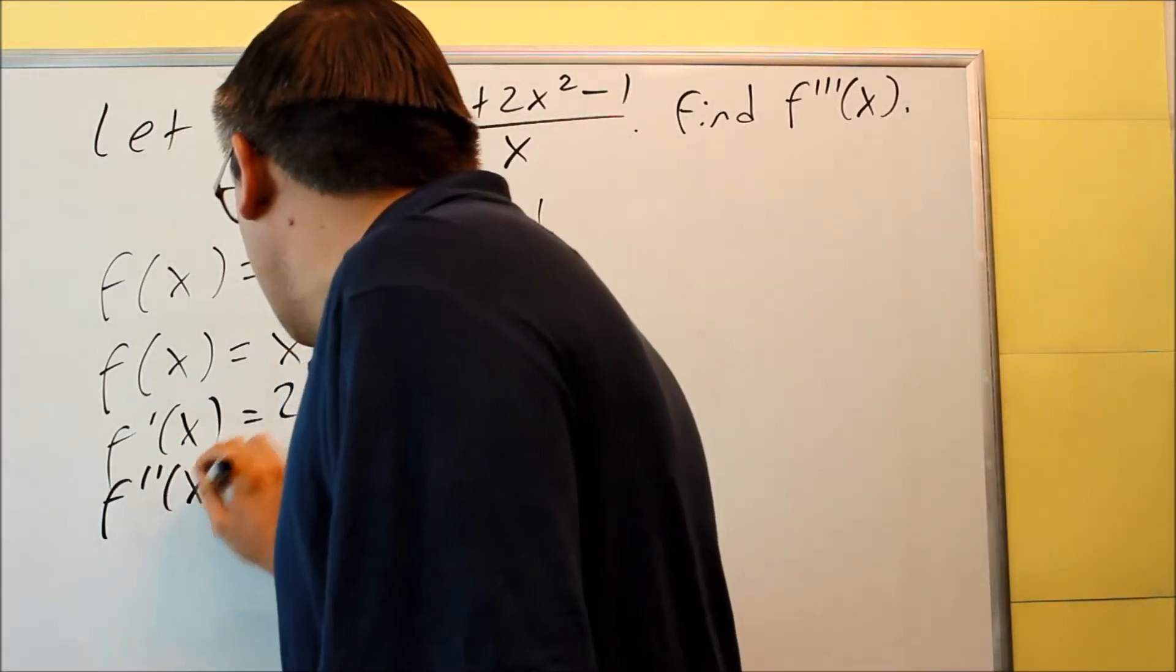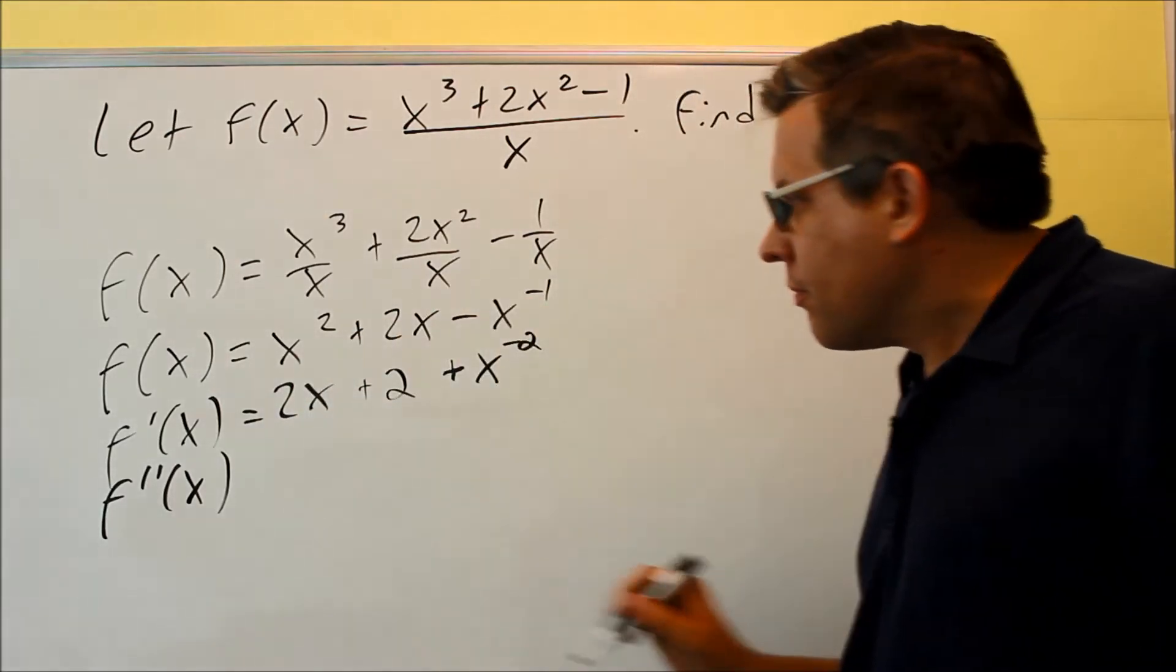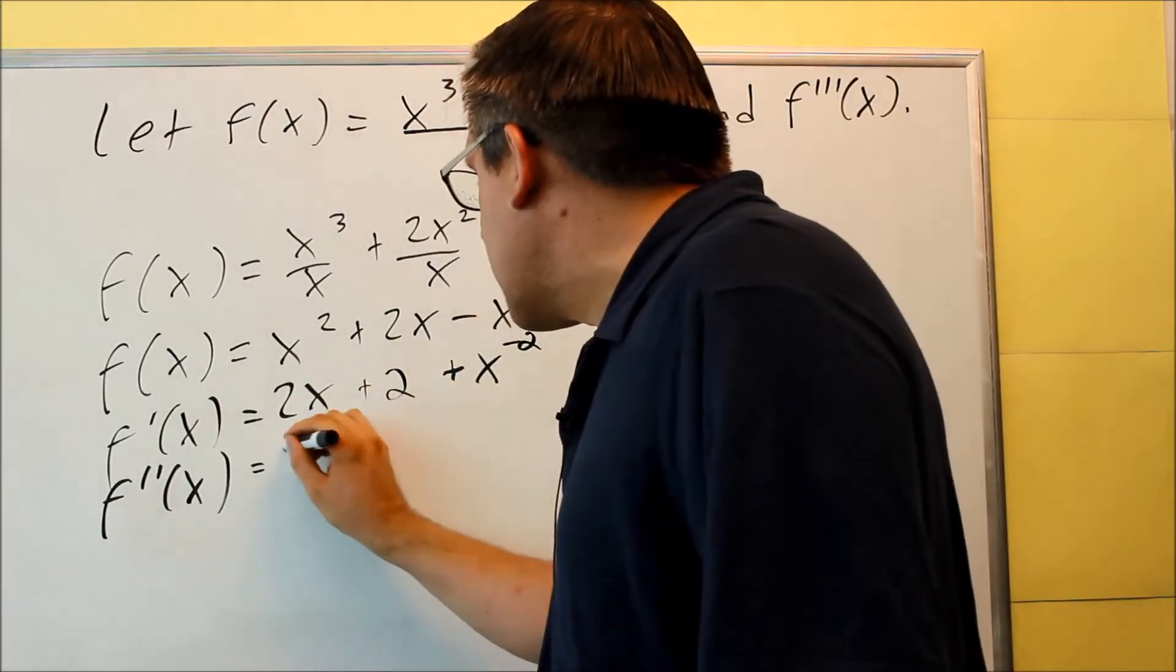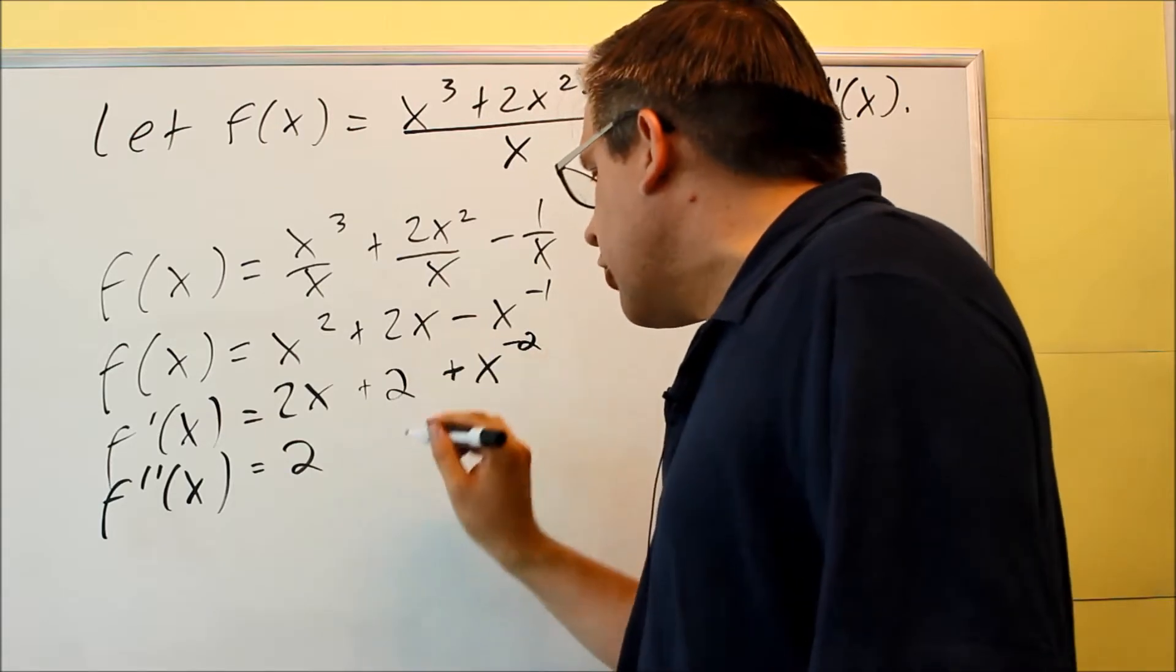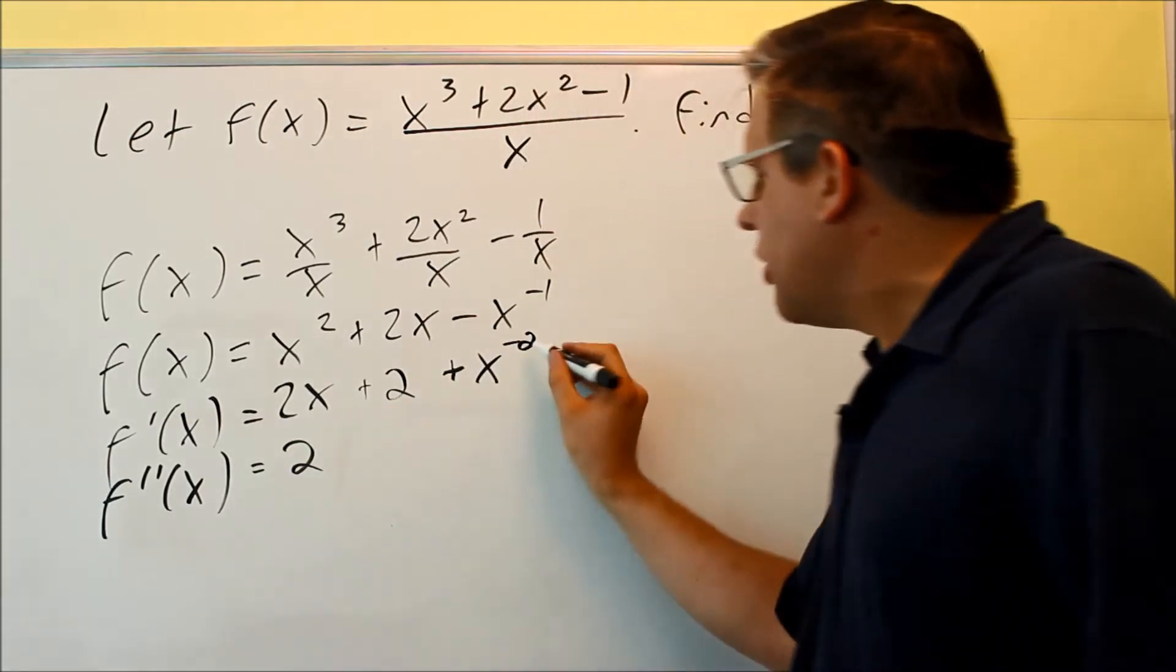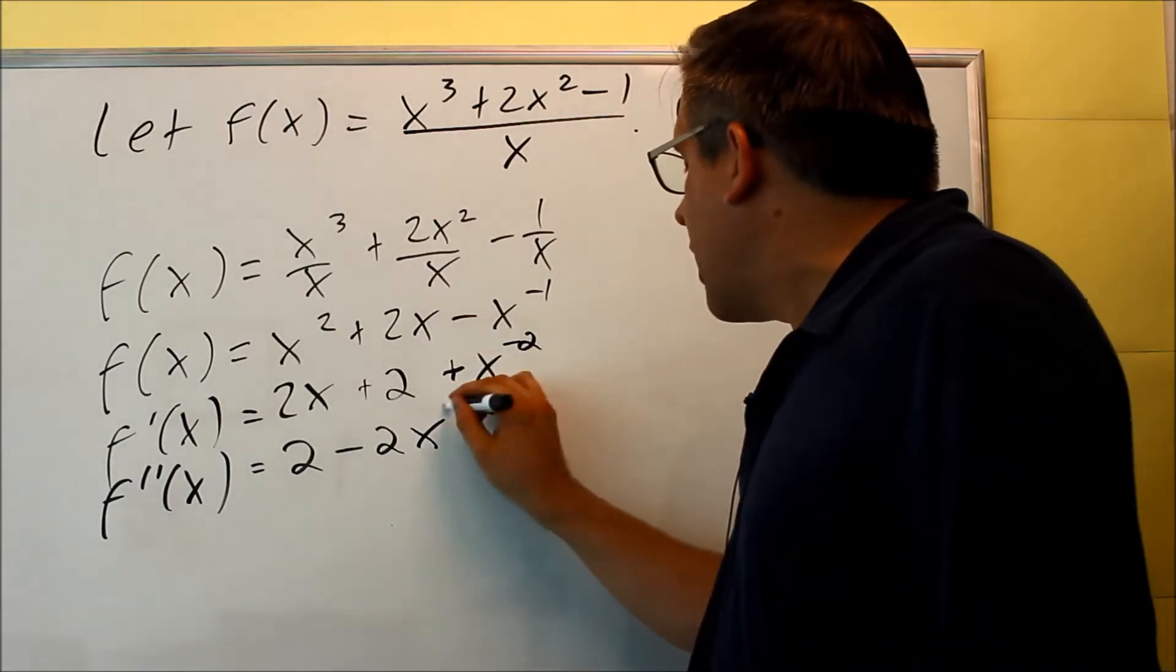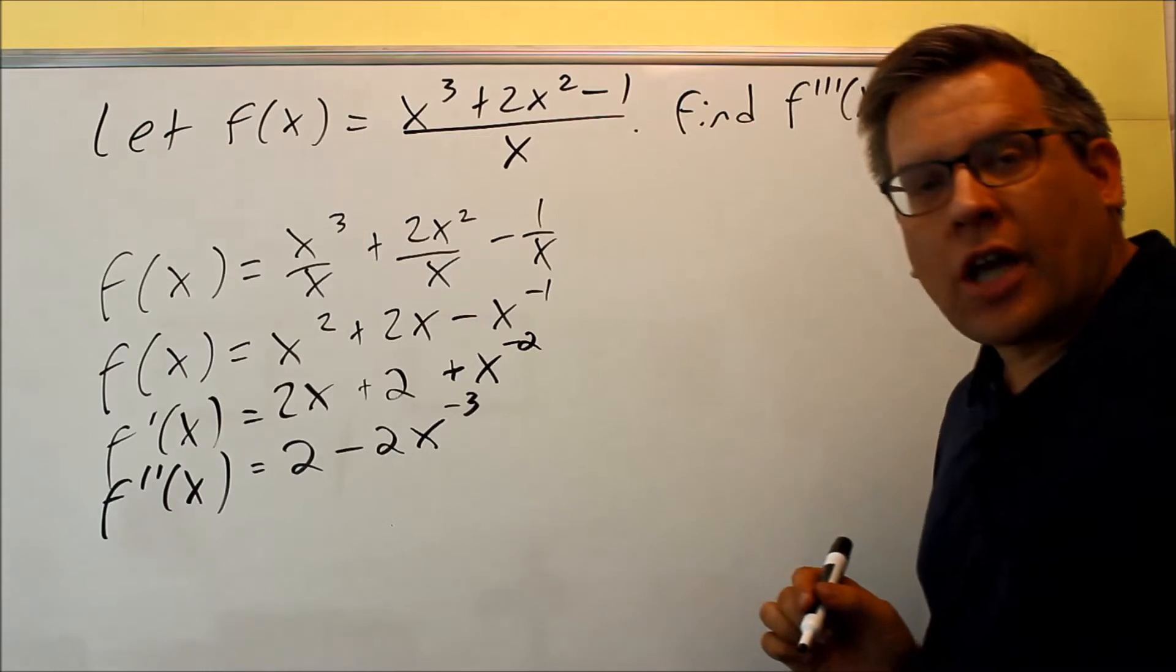So now, we're going to do the second derivative, which means that's the derivative of this one here. So we get derivative of 2x is 2, derivative of 2 is 0. And then, when we do this one, the negative 2 is going to come down. Subtract 1 from that power and you're going to get negative 3.